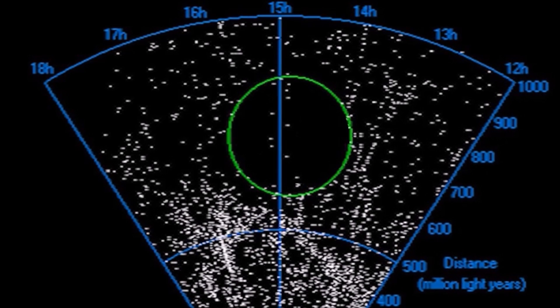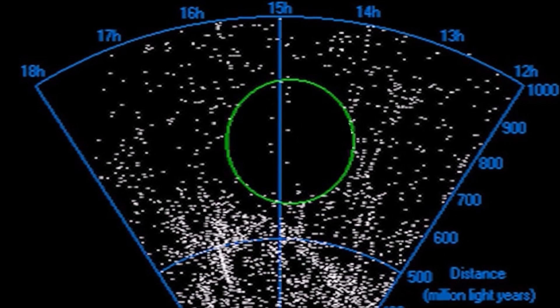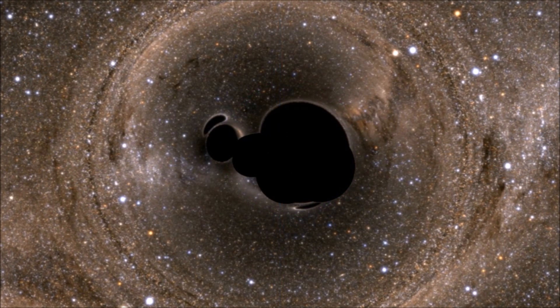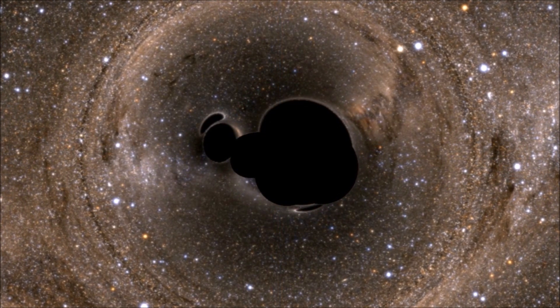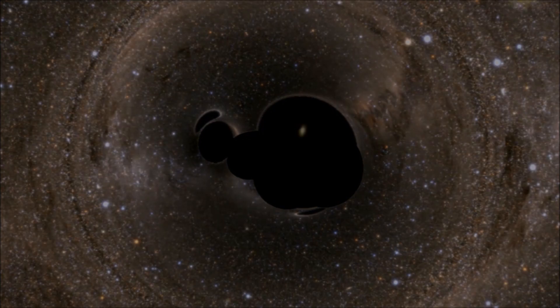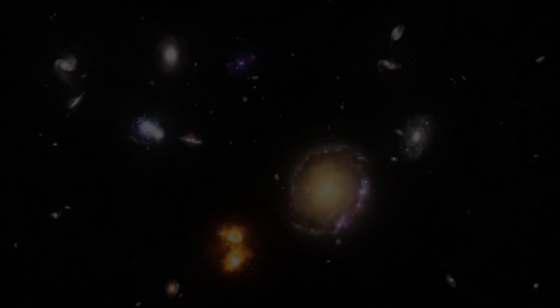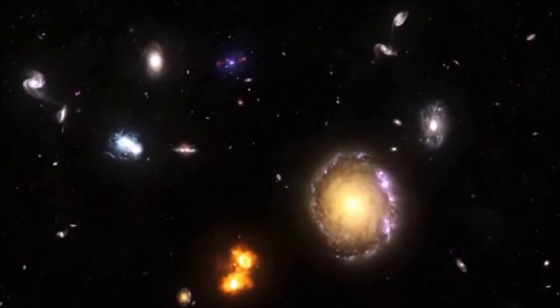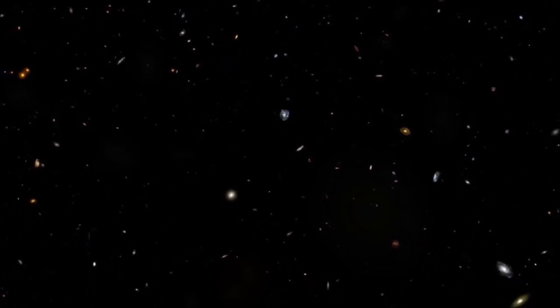Perhaps the most mysterious thing about the Bootes Void is that physicists can't explain its origins or its cause. Computer models suggest that smaller voids are caused by galaxies drawing closer to one another due to gravitational attraction, and clearing out large expanses of empty space between them. But this doesn't explain why the Bootes Void exists, because there hasn't been enough time since the universe began for gravity alone to clear out a space of that size.